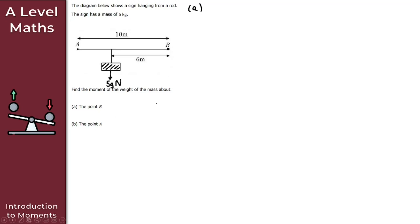For part a, about point B: the moment equals the magnitude of the force times the perpendicular distance. The magnitude of the force is 5g, and the perpendicular distance from B to the line of action of the force is 6 meters. So the moment is 5g × 6 = 30g = 30 × 9.8 = 294.